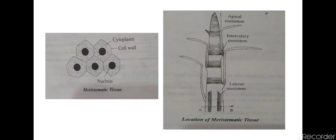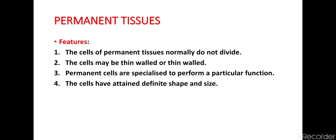Lateral meristem occurs on the side, almost parallel to the axis of roots and stem, and the function it performs is it increases the width or girth of the stem and root. Next is intercalary meristem — it basically occurs at the base of the leaves or at the base of the internodes, and it increases the length of the internode.